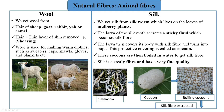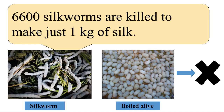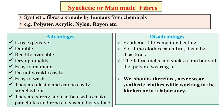Silk is a costly fiber of very fine quality. We get silk from the silkworm, which lives on the leaves of mulberry plants. The larva of the silk moth secretes a sticky fluid that becomes silk fiber. The larva then covers its body with this silk fiber, turning into a pupa — this protective covering is called a cocoon. These cocoons are boiled in water to get silk fiber, but unfortunately the pupa inside gets killed. Nearly 6,600 silkworms are killed to make just 1 kg of silk.